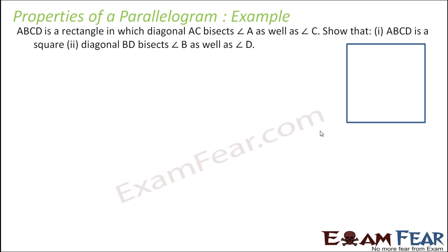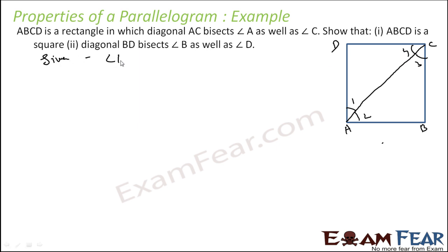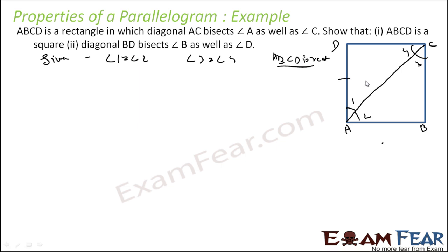ABCD is a rectangle in which diagonal AC bisects angle A. Let us draw diagonal AC. Diagonal AC bisects angle A as well as angle C. This is angle 1, angle 2, angle 3, angle 4. Given: angle 1 is equal to angle 2, angle 3 is equal to angle 4, and ABCD is a rectangle — meaning opposite sides are equal. We have to prove that ABCD is a square, meaning adjacent sides are also equal.